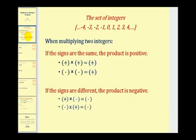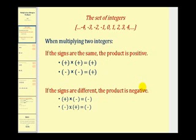When multiplying two integers, if the signs are the same, the product is positive. So a positive times a positive is positive, and a negative times a negative is also positive. If the signs are different, then the product is negative. So a positive times a negative is negative, and a negative times a positive is negative.